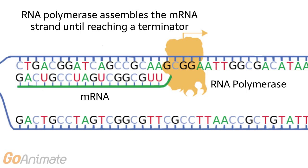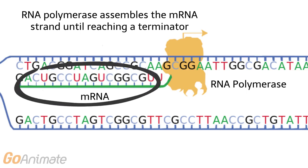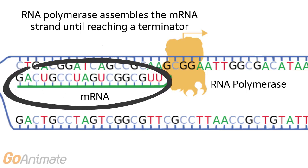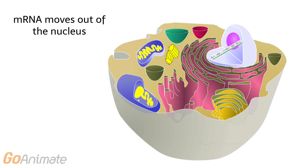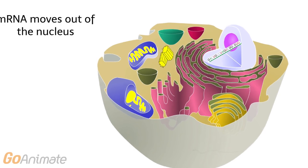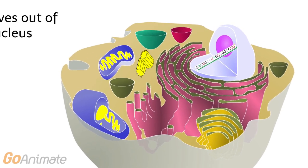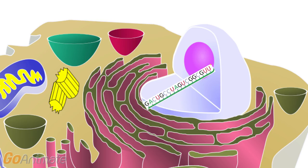The mRNA strand is assembled until reaching a terminator region on DNA. Each three-base sequence on DNA is known as a base triplet, and most of these will code for amino acids. Once the mRNA strand is complete, it moves out of the nucleus to the rough endoplasmic reticulum.